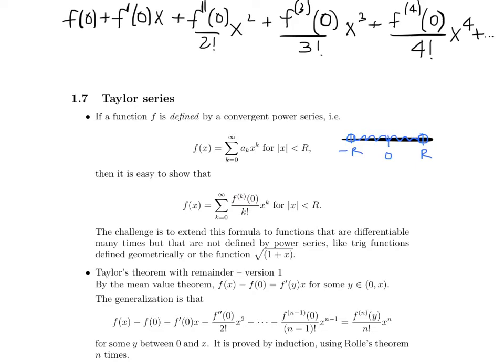Here I've written out some of the first few terms of this power series. Note that the zeroth derivative of f is actually just the function itself, x to the 0 is just 1, and 0 factorial is also 1, because the number of ways you can arrange 0 things is just one way. We then have f prime of 0 times x, plus f double prime of 0 divided by 2 factorial times x squared, plus the third derivative of f evaluated at 0 over 3 factorial times x cubed, and the fourth derivative evaluated at 0 over 4 factorial times x to the fourth.